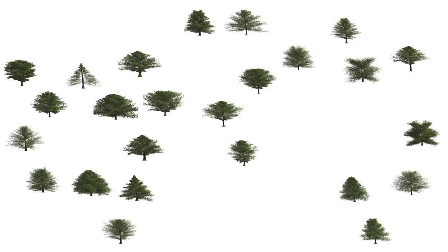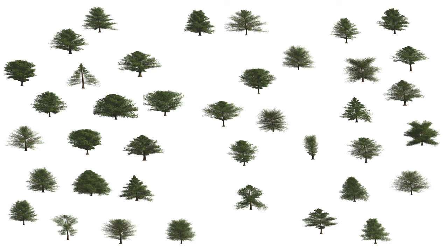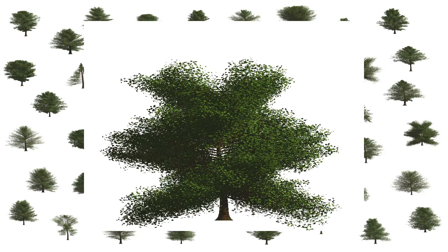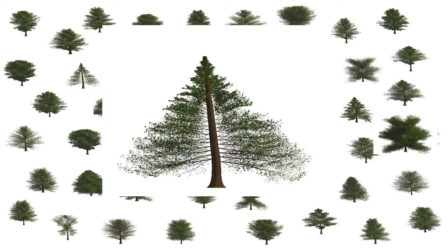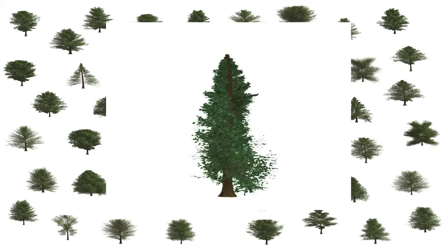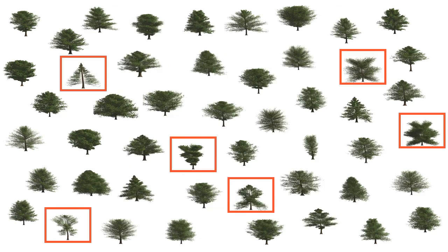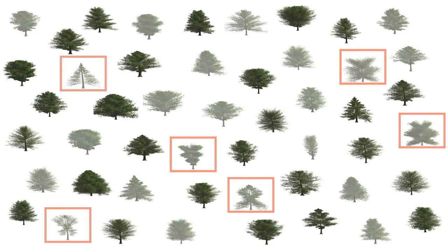We can extend our framework to work with parametric models as well as grammars. Randomly generated parametric trees can have unnatural shapes, and our system selects a set of trees with natural-looking shapes.